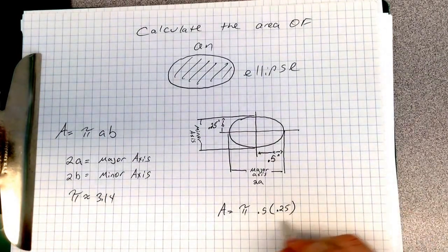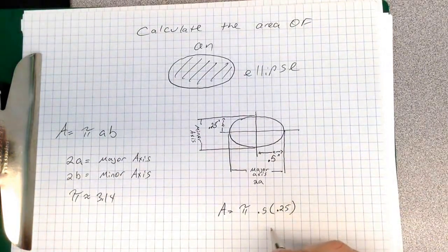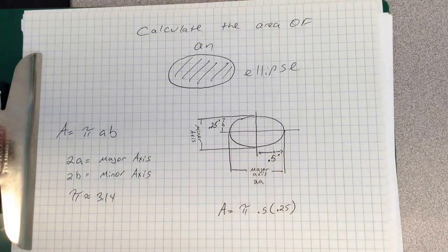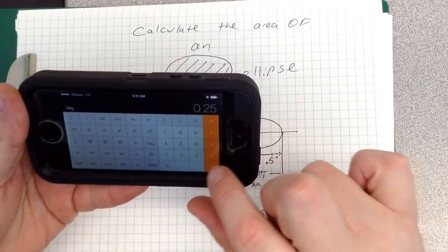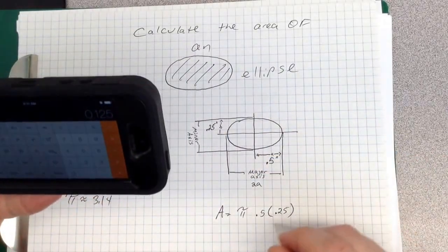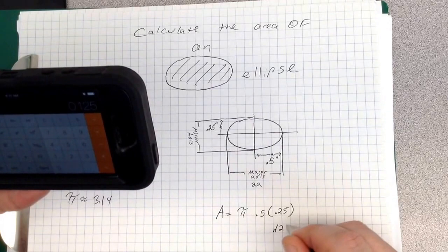Okay, so let's take care of this first. 0.5 times 0.25. Get my calculator. 0.5 times 0.25 equals 0.125. So that is 0.125.